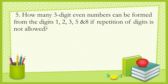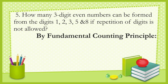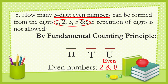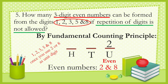Number five: how many three-digit even numbers can be formed from the digits 1, 2, 3, 5, and 8 if repetition is not allowed? By the fundamental counting principle, the units digit must be even. The even numbers available are 2 and 8, so there are two choices for the units digit. Since repetition is not allowed, that leaves four choices for the hundreds digit and three choices for the tens digit. Multiplying: 4 × 3 × 2 equals 24.